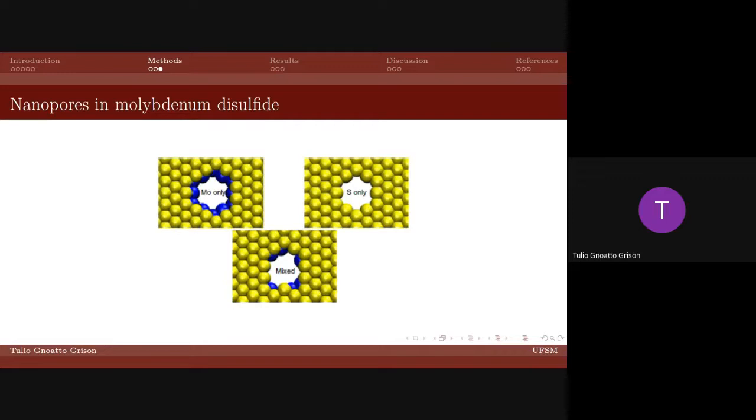To investigate the relative performance of molybdenum disulfide over other two-dimensional materials, graphene nanopores, which have been shown to be promising for water desalination, are also considered.